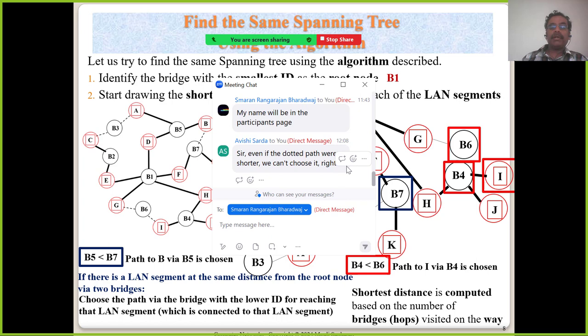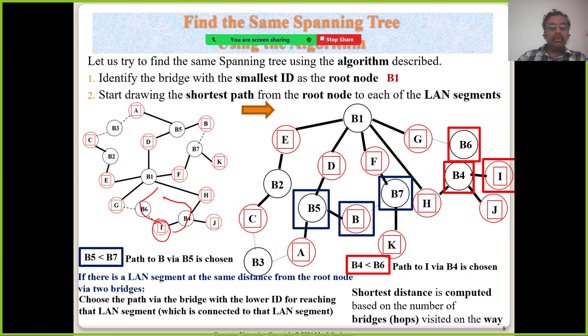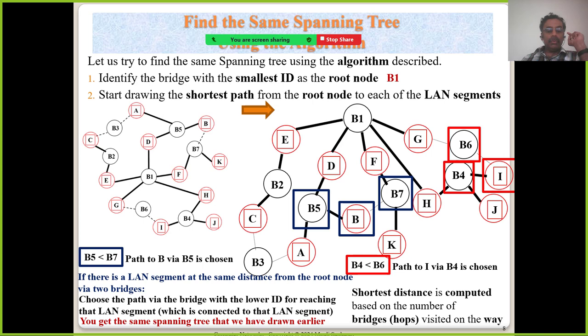Even if a dotted path were shorter, we cannot choose it — the dotted line comes later as a result of choosing a shortest active path. To start with, everything is a solid line. We apply designated bridges for each LAN, find the shortest path, and break ties using bridge numbers when equidistant. Then the losing paths become dotted. The dotted designation comes after the algorithm runs, not before. The same spanning tree as drawn earlier is produced.